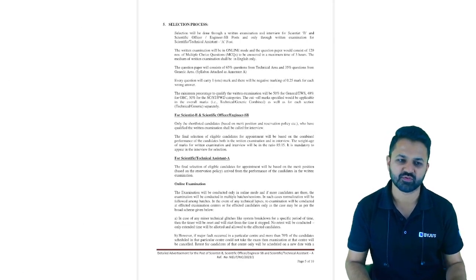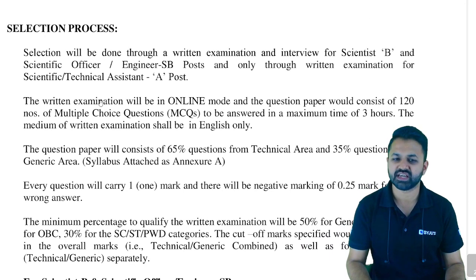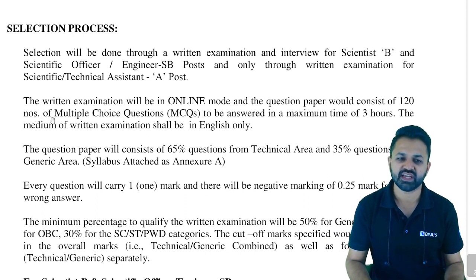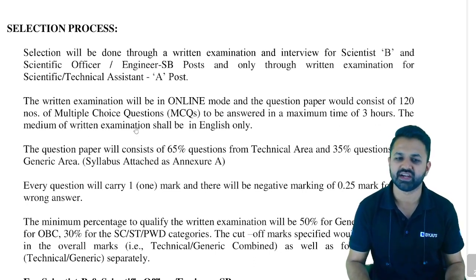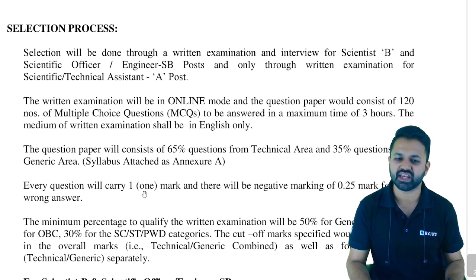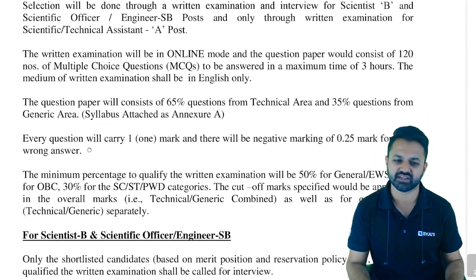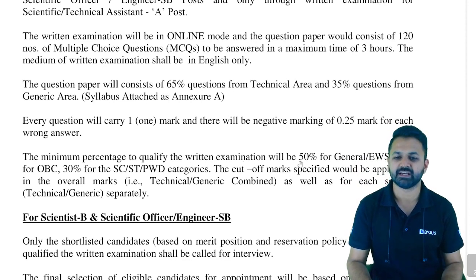The selection procedure is an online written examination. The question paper consists of 120 MCQs to be answered in a maximum of 3 hours (180 minutes). The medium is English only. There will be 65 questions (65%) from the technical area and 35 questions from the generic area. Every question carries one mark, and there is negative marking of 0.25 marks for each wrong answer. The minimum passing percentage is 50% for general, 40% for OBC, and 30% for SC, ST, and PWD.